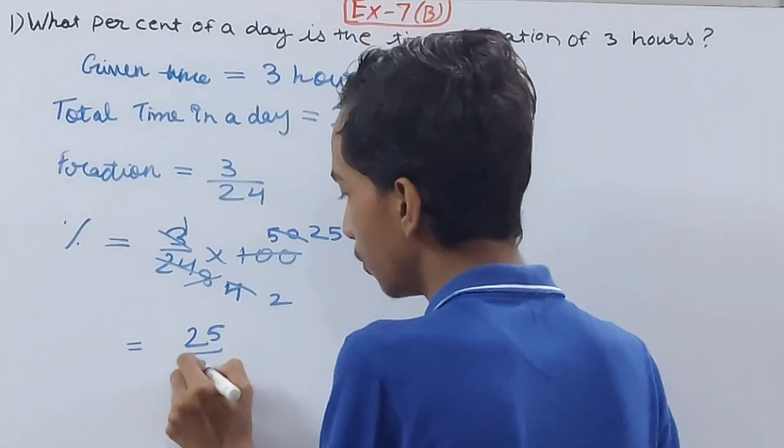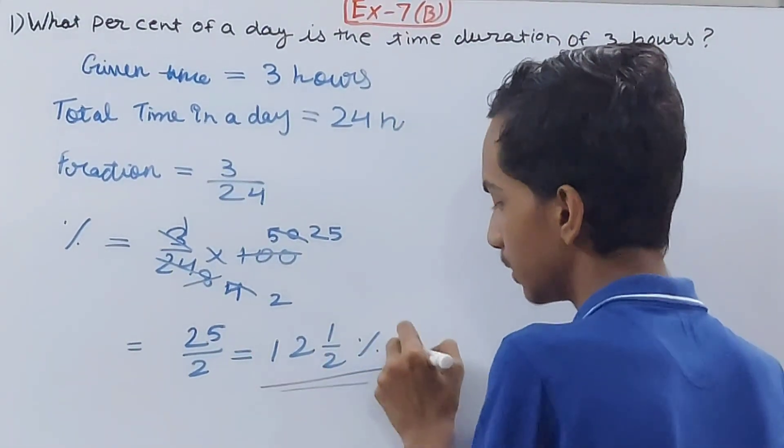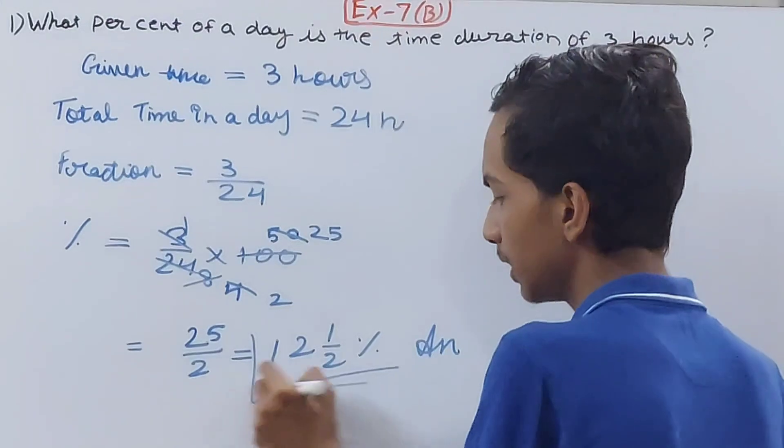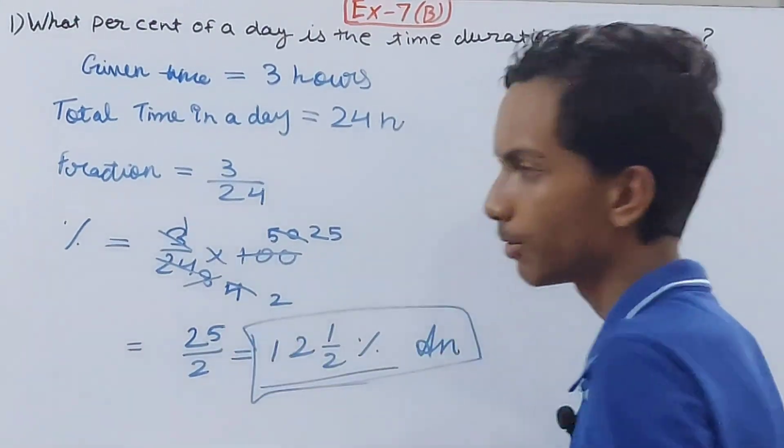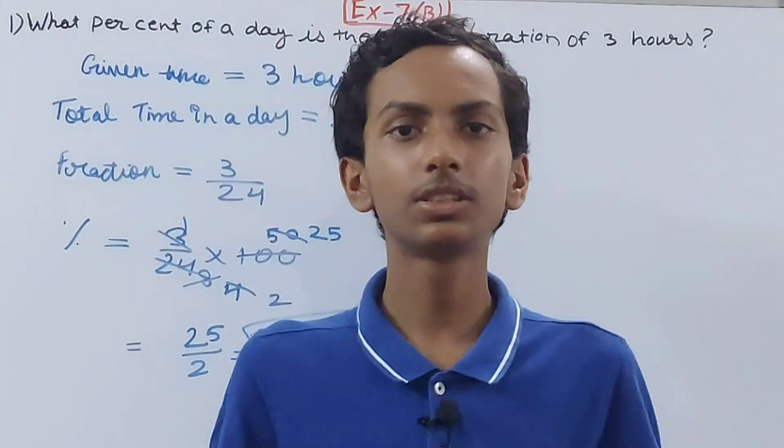So we get 25 upon 2 that you can write down as 12 whole 1 by 2 percent. This becomes the final answer. 3 hours represents 12 and a half percent of the entire day.